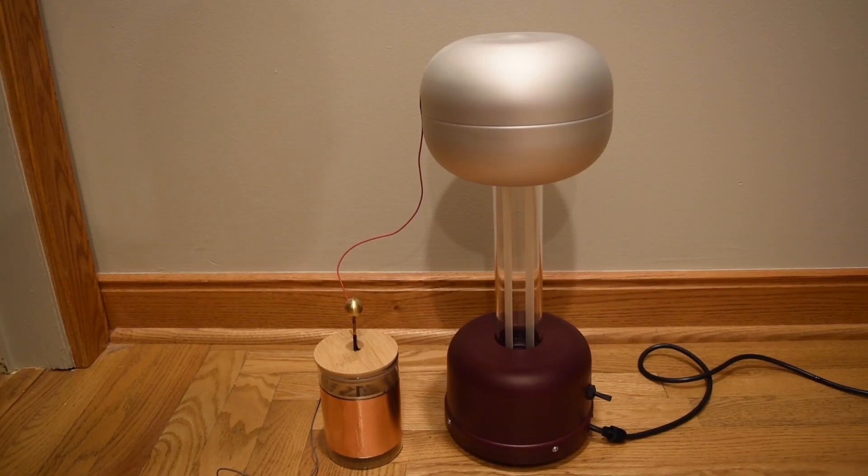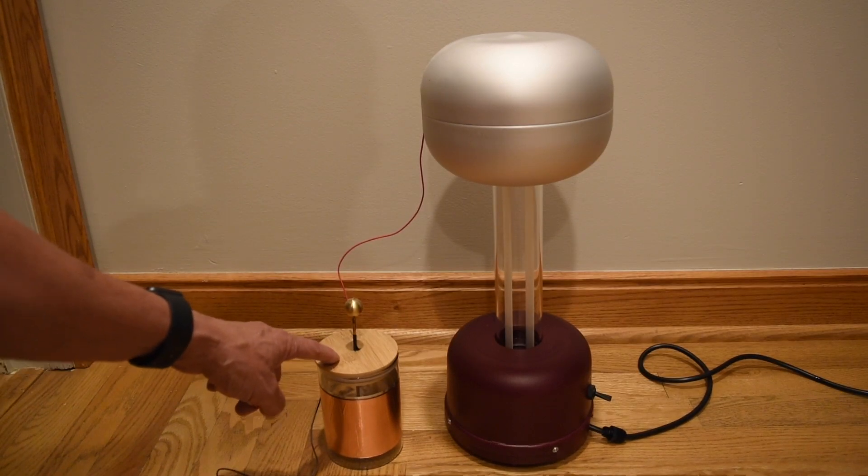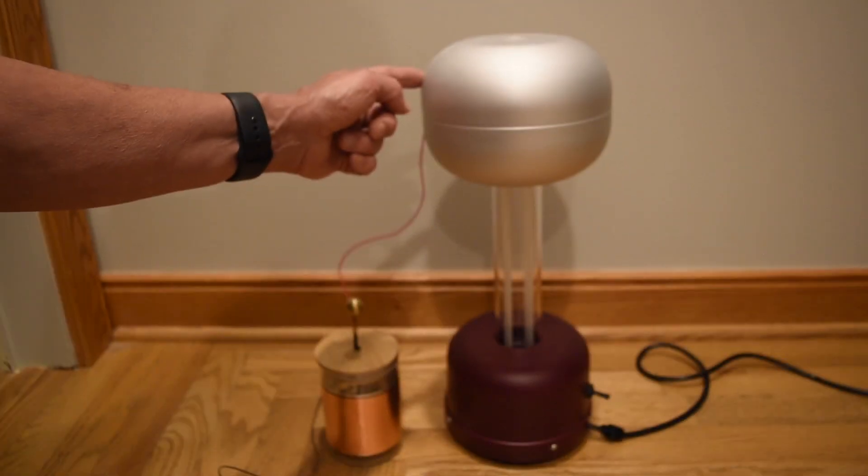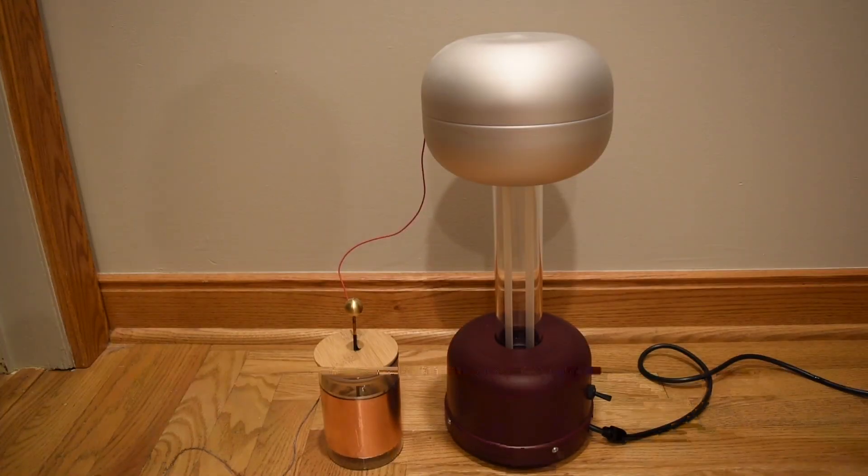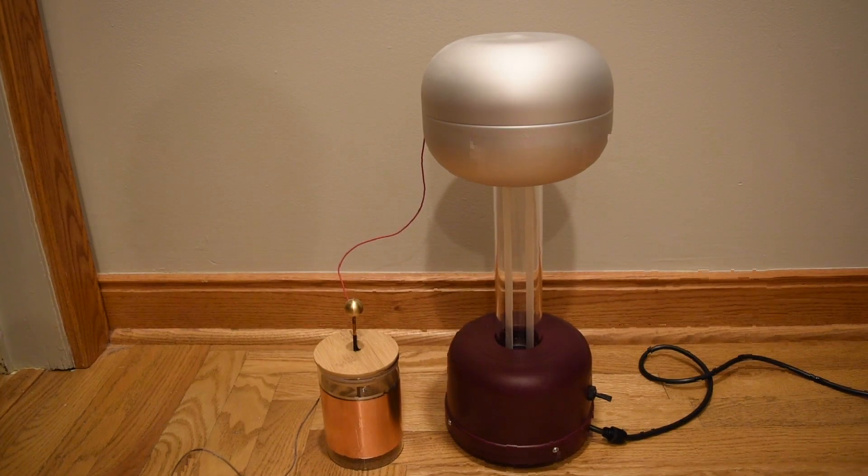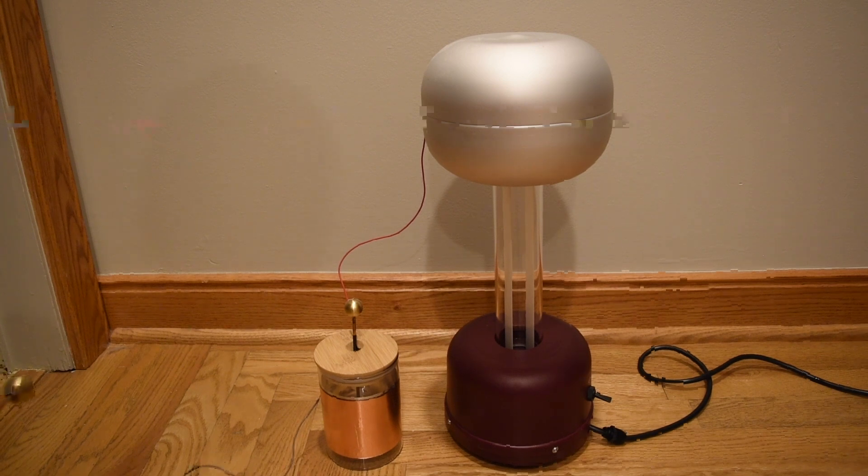I'm going to use the Van de Graaff generator to charge our capacitor. I've connected a wire from the Van de Graaff generator to the electrode that attaches to the inside conductor of our capacitor. And then I have a wire attached to the outside conductor, which I will hold and act as ground. I'm not going to let the Leiden jar charge up to the full voltage of the Van de Graaff generator. That would take a long time because the Van de Graaff generator produces a small current.